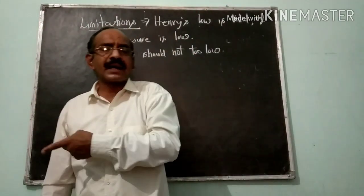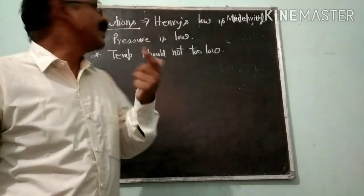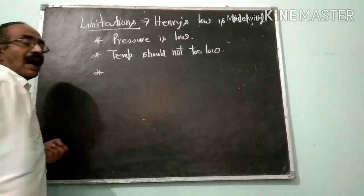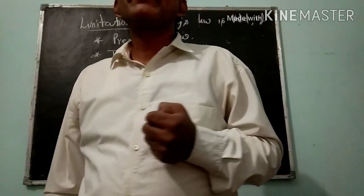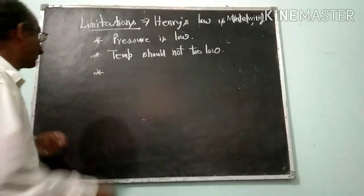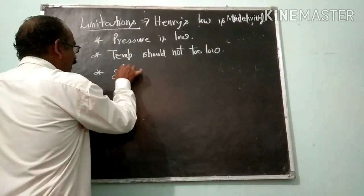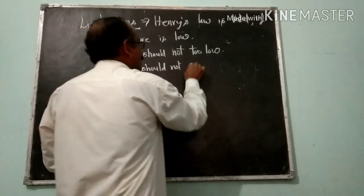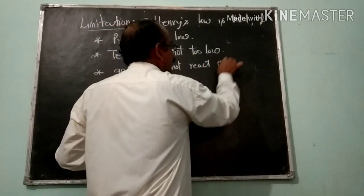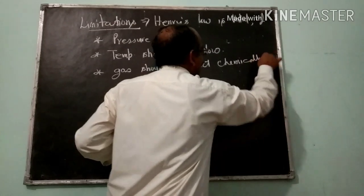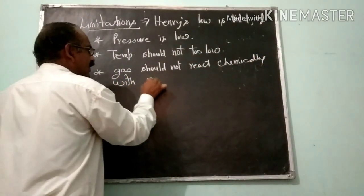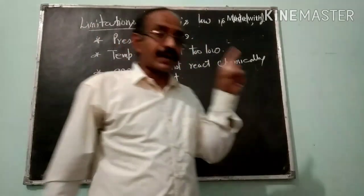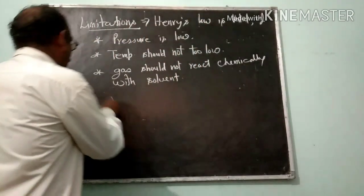Second limitation: temperature should not be too low. If the temperature becomes very very low, vapor pressure also becomes low and deviation will increase. Additionally, the gas that you are dissolving should not react chemically with the solvent.